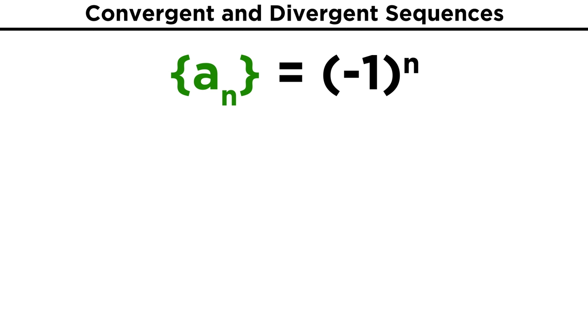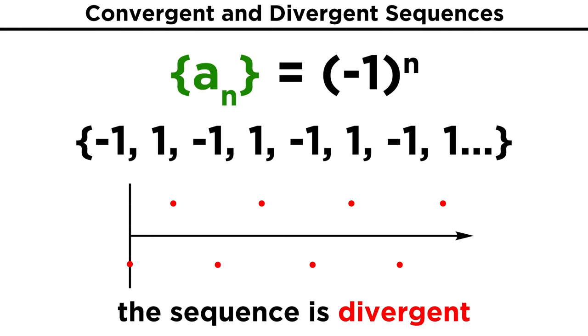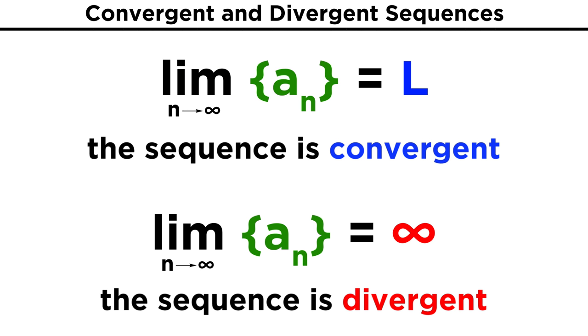Some sequences will be divergent without going to infinity, like negative one to the n power. This just alternates between positive and negative one forever, so there is no limit. So once again, we look at what a sequence does as n approaches infinity. If the sequence asymptotically approaches some finite number, it is convergent. If it does not do that, it is divergent.